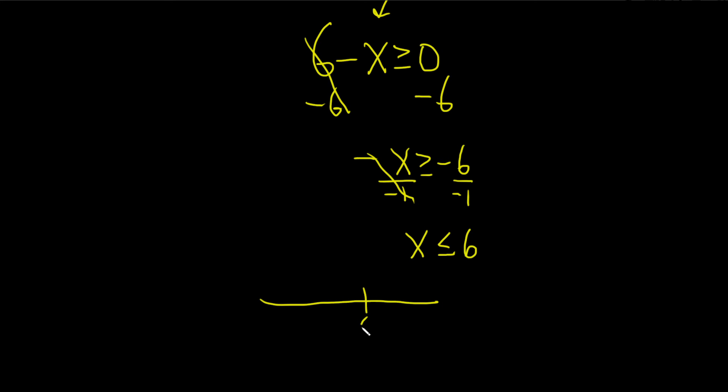So here's six. And it's all of the numbers less than six. So over here. And because it has an equal to piece here, we use a bracket. And just remember that the bracket opens towards the shading.